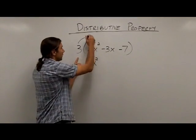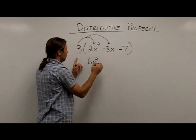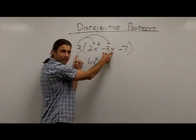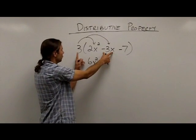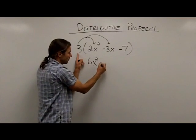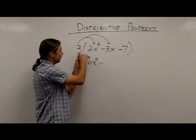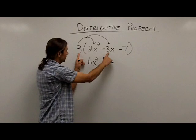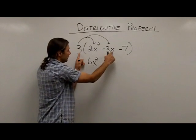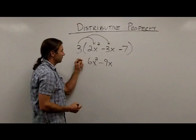Now I need to take the 3 and multiply by the next term. So I'm going to take 3 times the negative 3x. Notice this is a positive number times a negative number, so that is going to give me a negative result. And 3 times 3, multiplying the coefficients, is going to give me 9. I don't have any x variables to multiply, so I'm going to bring the x down.